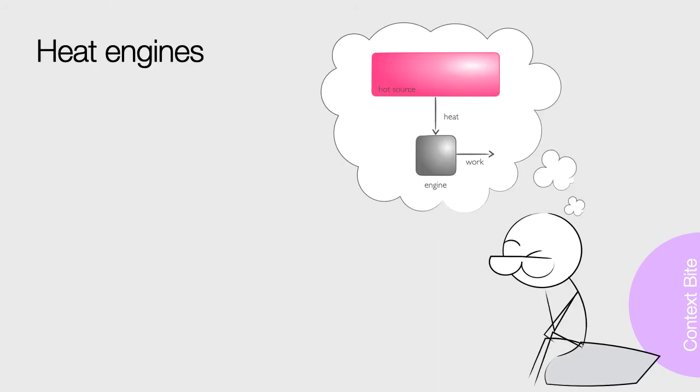When thinking about steam engines, Kelvin said that no cyclic process is possible in which heat is taken from a hot source and completely converted into work. This is just a statement of efficiency of the steam engine. All of the other energy is wasted.